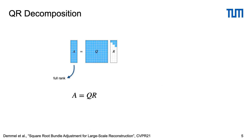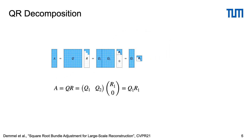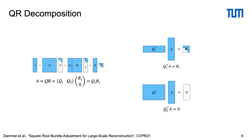Before we continue with solving this optimization problem, let us briefly recap the QR decomposition. A full-rank matrix A can be decomposed into an orthogonal matrix Q and an upper triangular matrix R, where white cells indicate zero elements. We can group the columns of Q into Q1, corresponding to the easily invertible square matrix R1, and Q2, corresponding to zero rows. It directly follows that we get R1 by projecting A onto Q1, and 0 by projecting A onto Q2. In other words, the columns of Q2 form the left null space of A.